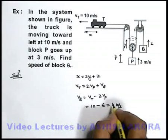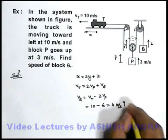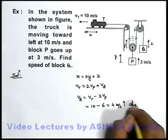As it is coming positive, that means the direction which we have considered is right. So block Q is going up at 4 meters per second, this is the answer to this question.